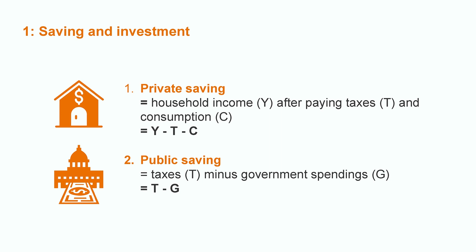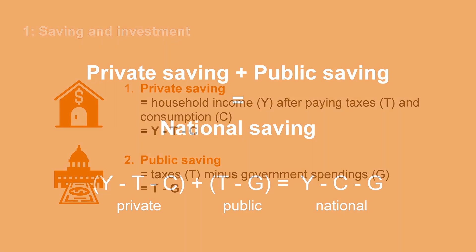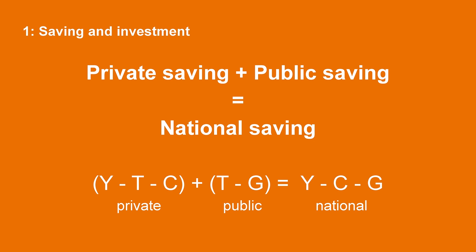The second type is public saving. This is saving by the government. Public saving is the difference between the incomes of the government and its expenditures — so taxes minus government spending on education, healthcare, and other causes. The sum of private and public saving constitutes national saving. National saving is equal to national income Y, after consumption C and government spending G. Taxes, T, cancel out when we open the parentheses.